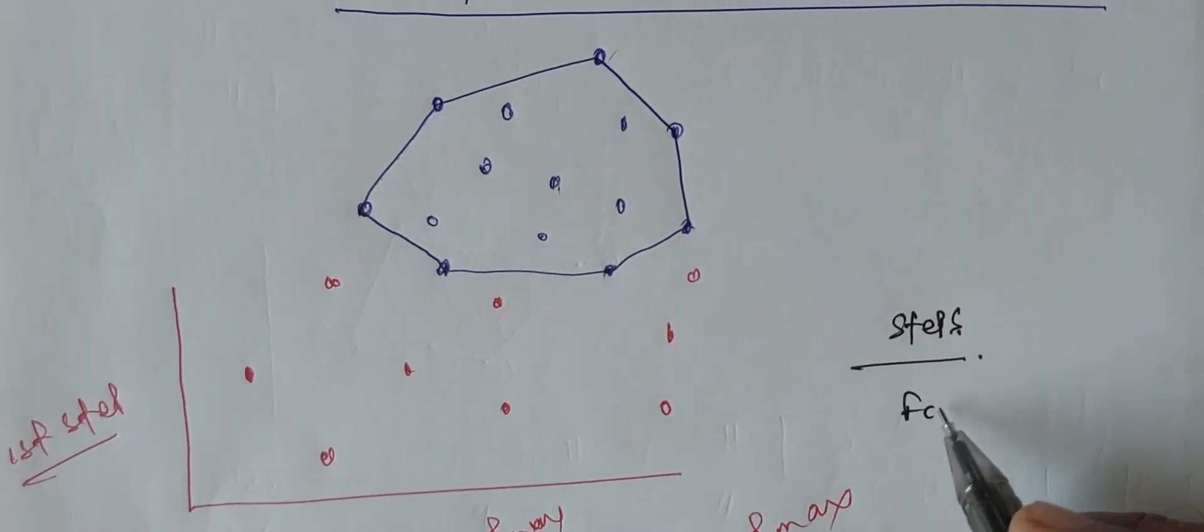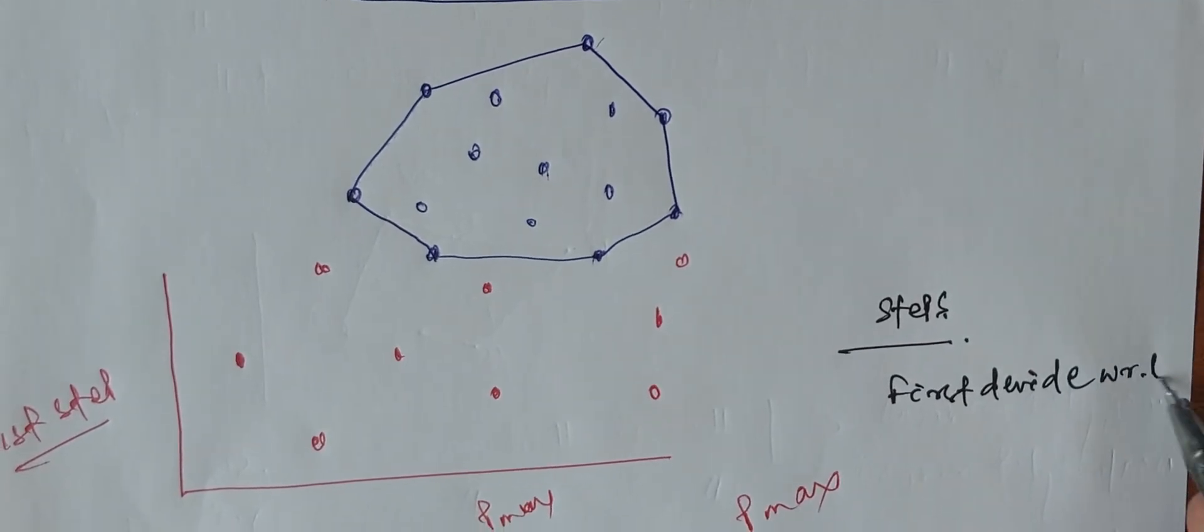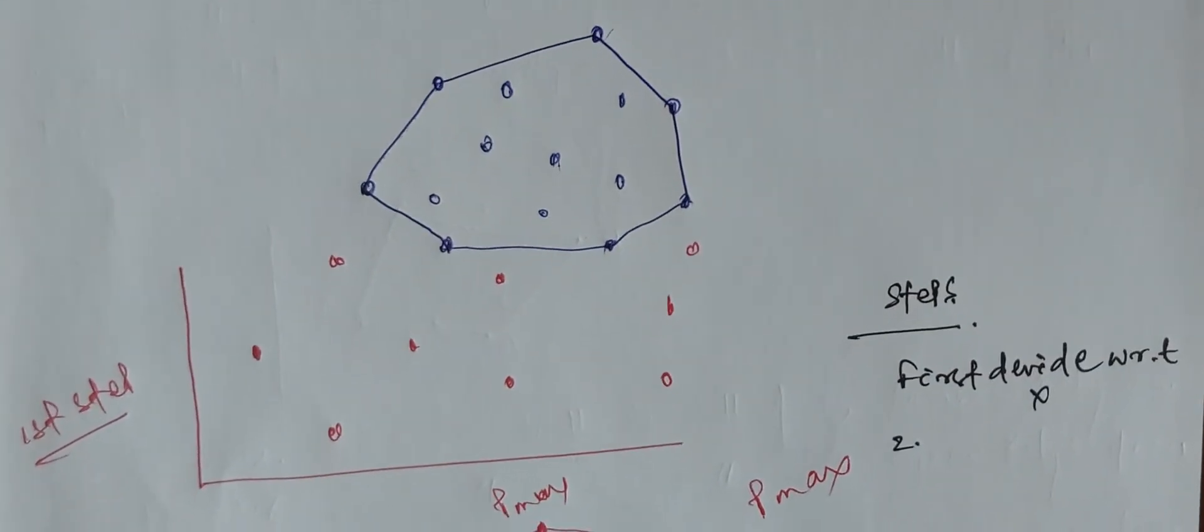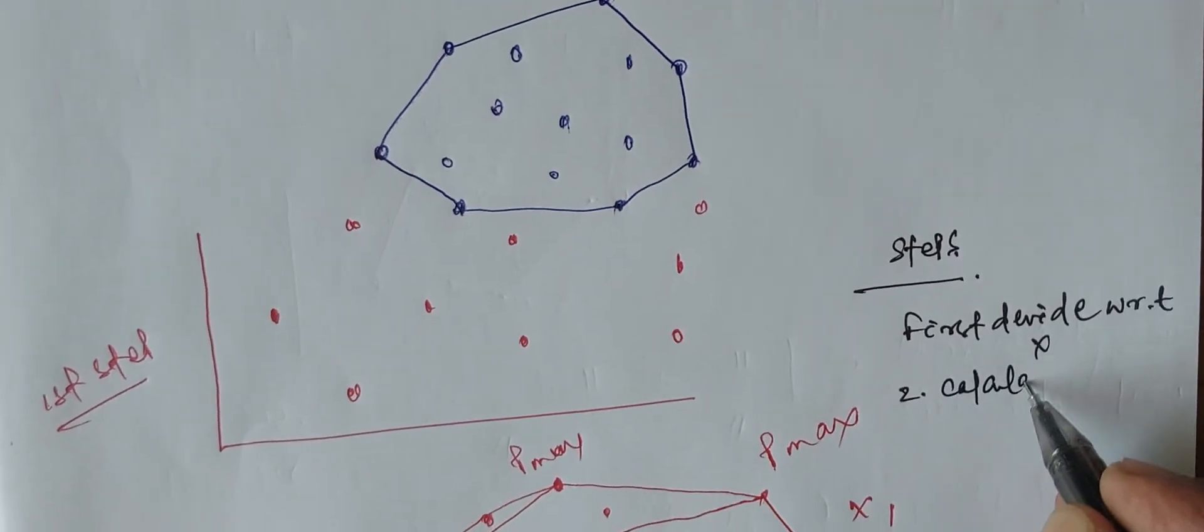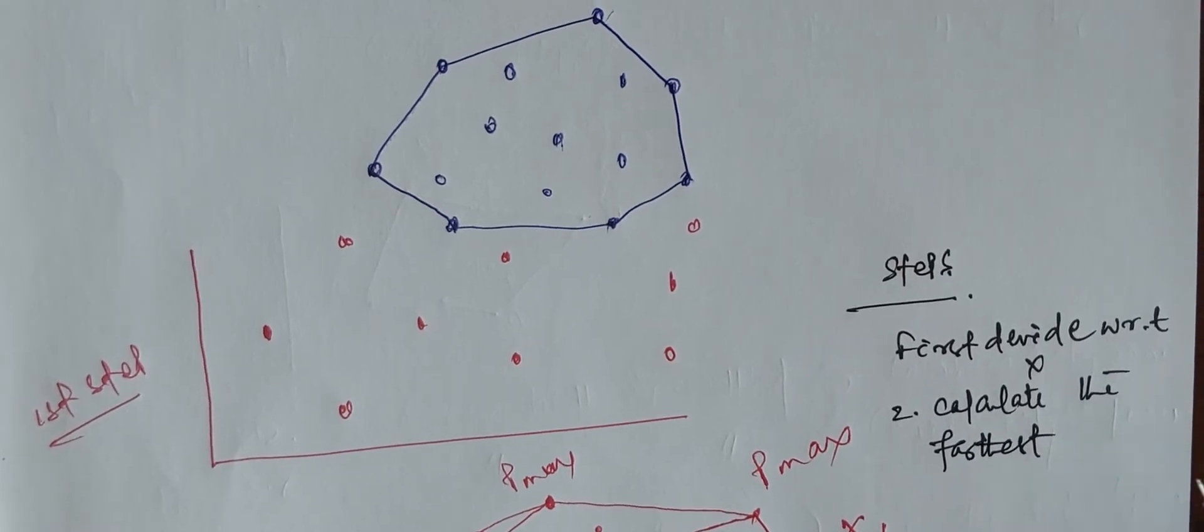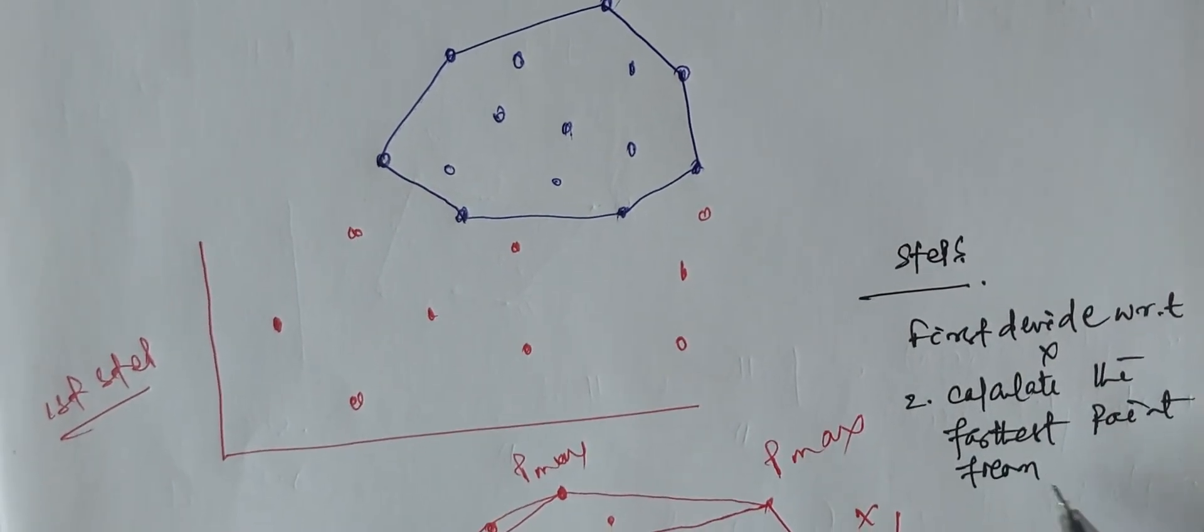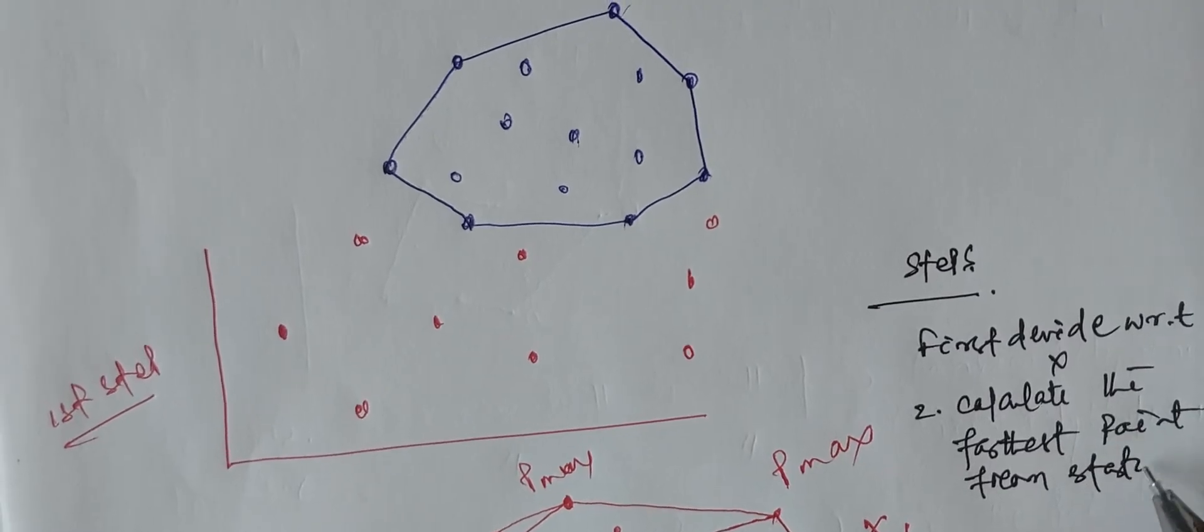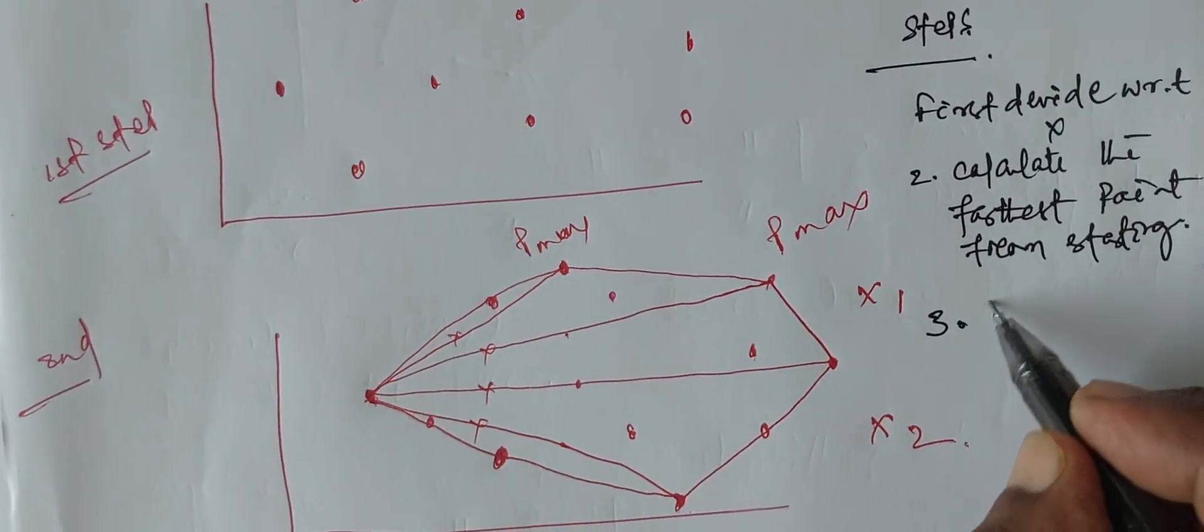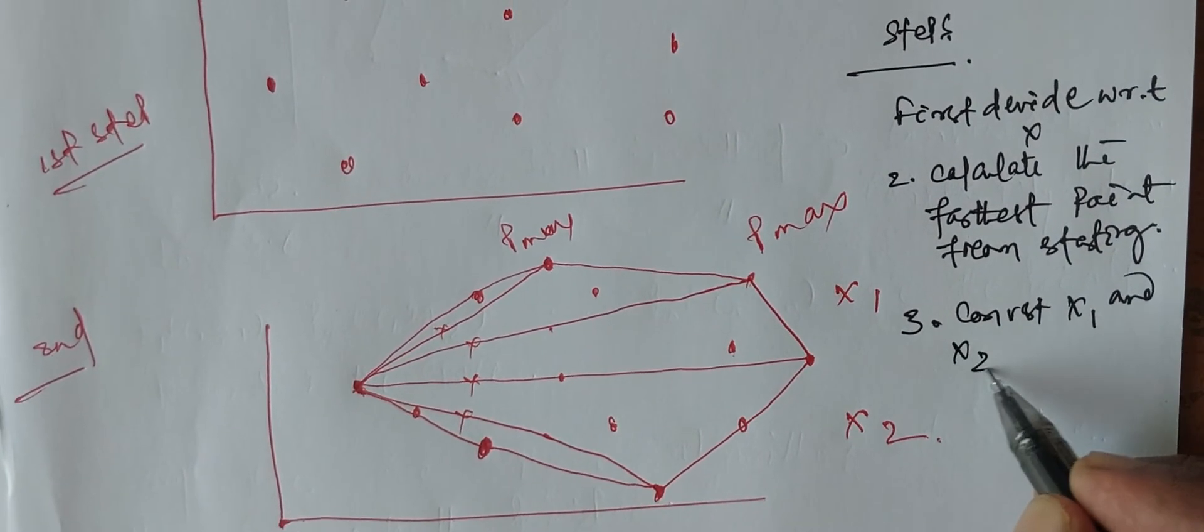First divide with respect to x-axis. Second step, then calculate the farthest point from the starting point. Third step, x1 and x2 are the two halves.